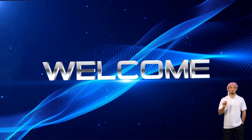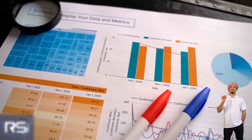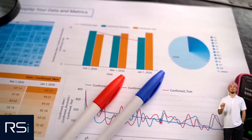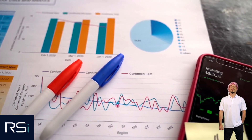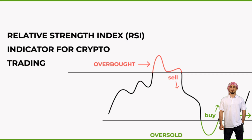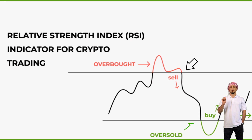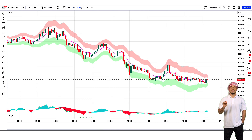Hello Traders! Many of you love using RSI or the Relative Strength Index because of its simplicity and effectiveness in finding strong trends. If you're still using RSI as an overbought indicator to sell, or using it as an oversold indicator as a signal to buy, then you're using it wrong.